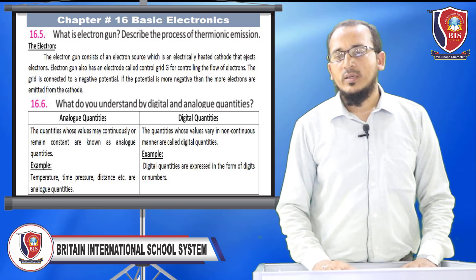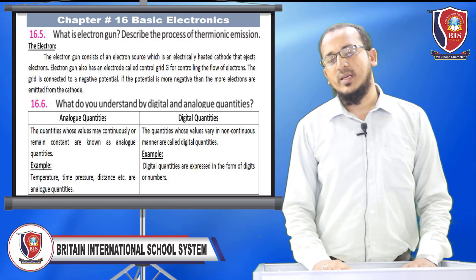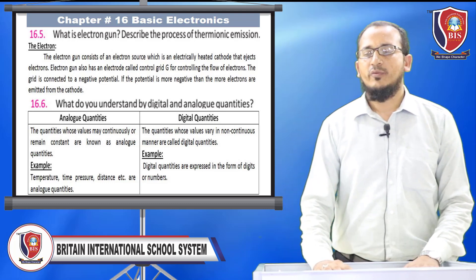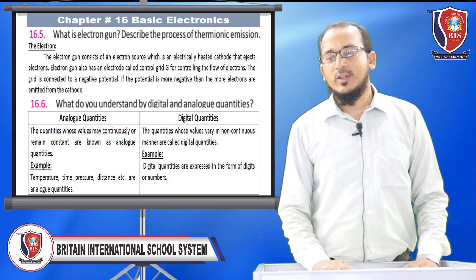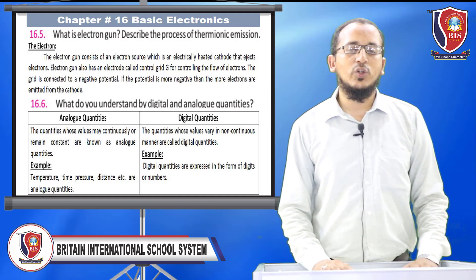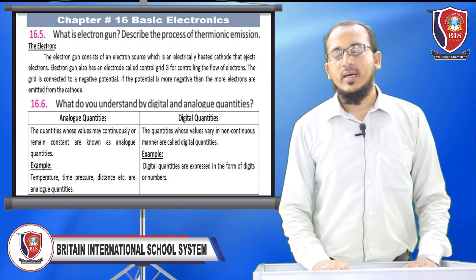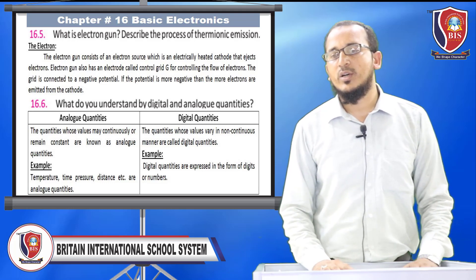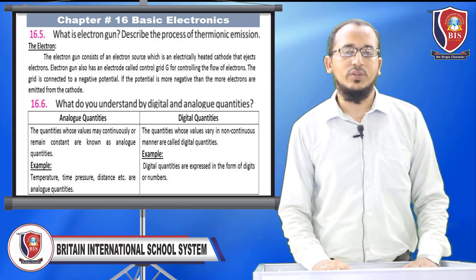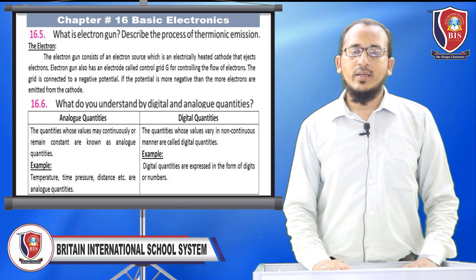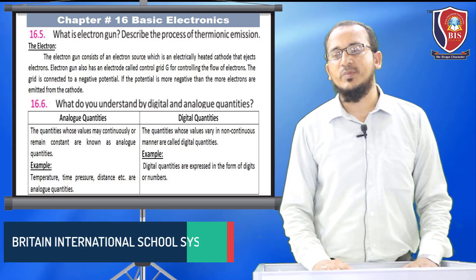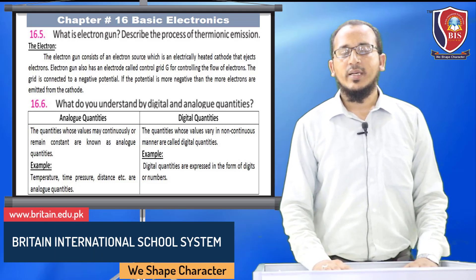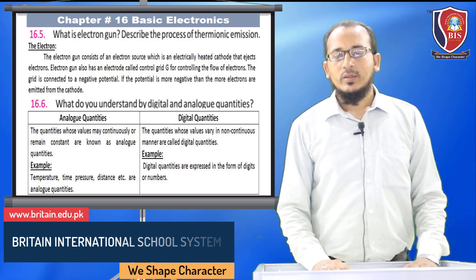What is an electron gun? Describe the process of thermionic emission. The electron gun consists of an electron source — an electrically heated cathode that ejects electrons. It also has an electrode called the control grid for controlling the flow of electrons. The grid is connected to a negative potential; if the potential is more negative, then more electrons are emitted from the cathode.